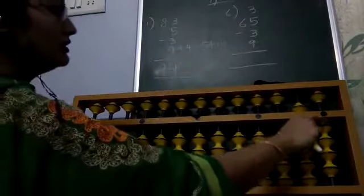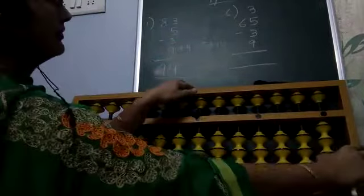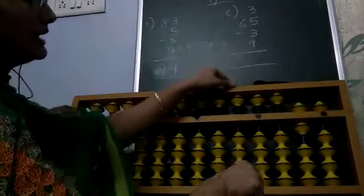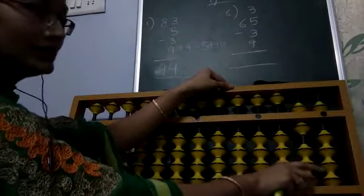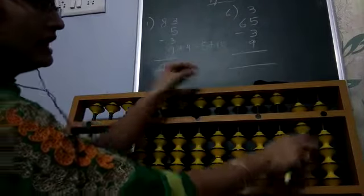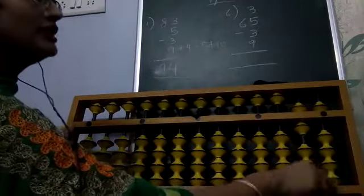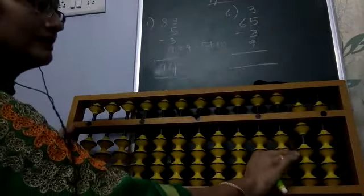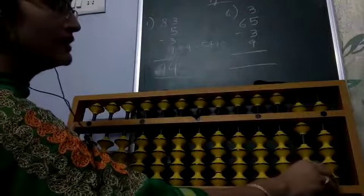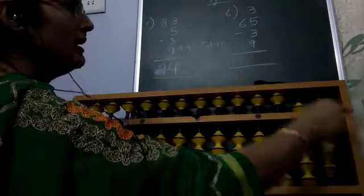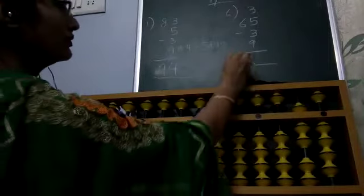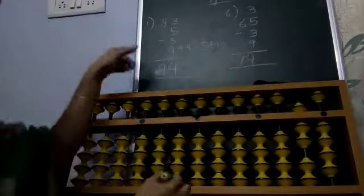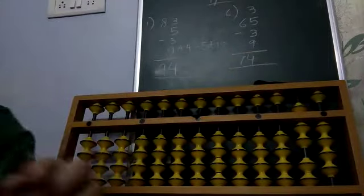Next question: 65 minus 3 plus 9. Plus 9 is again not possible because its formula is minus 1 plus 10. For minus 1, we apply the small friend formula: plus 4 minus 5, and then plus 10. The answer is 74. This way you will do page number 9. We now move to page number 10.